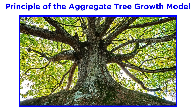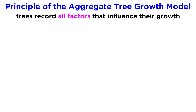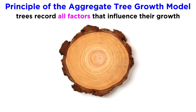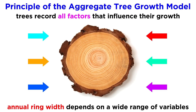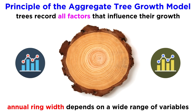The principle of the aggregate tree growth model states that trees record all factors that influence their growth. This is essential, since trees record more than just information on a single limiting factor. Dendrochronologists must take this into account when studying a chronology, since annual ring width is dependent upon a wide range of variables. This is why statistical analyses are necessary to understand growth trends — we'll go over this in more detail when we examine sampling and analyses.